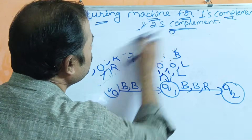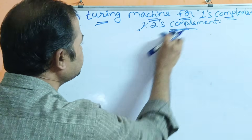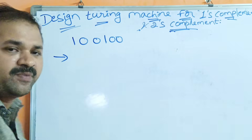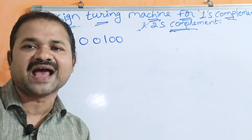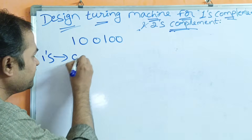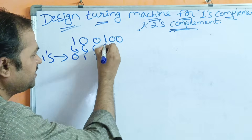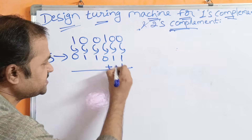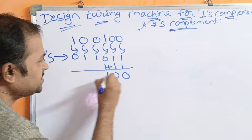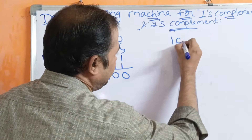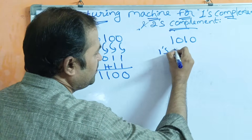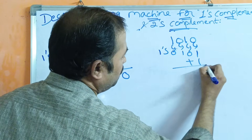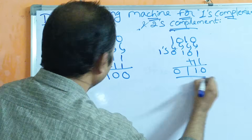Now let's see how we can design a Turing machine for 2's complement. Let we have a number like 1 0 0 1 0 0. The 2's complement means first find the 1's complement, then add 1. For 1's complement: 1→0, 0→1, 0→1, 1→0, 0→1, 0→1. Then add 1: 1+1 = 0 carry 1, 1+1 = 0 carry 1, 0+1 = 1, then 1, 1, 0.